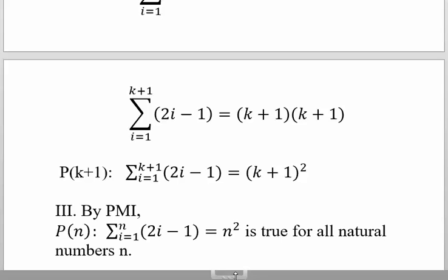Roman numeral 3: by the principle of math induction, our statement P(n), which says that we have a summation from i equals 1 to n of 2i minus 1 equals n squared. This statement is true for all natural numbers n.